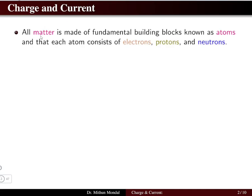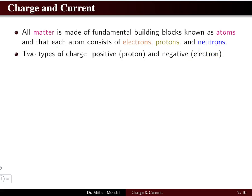Generally when we talk about matter, which is fundamentally composed of atoms, each atom basically consists of electrons, protons and neutrons. Two types of charge are generally present: one is the positive charge and another is the negative charge. Positive charge corresponds to the proton whereas negative charge corresponds to the electron.